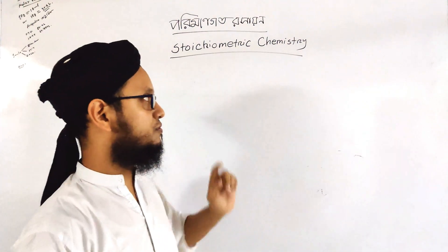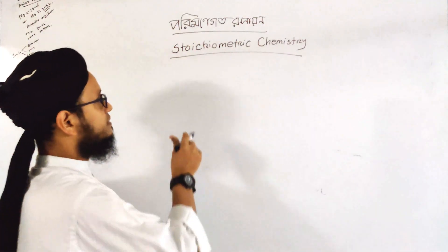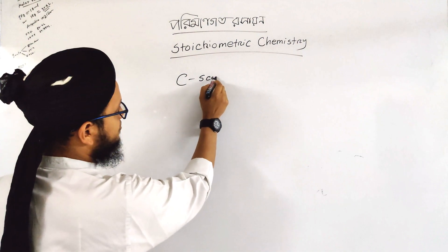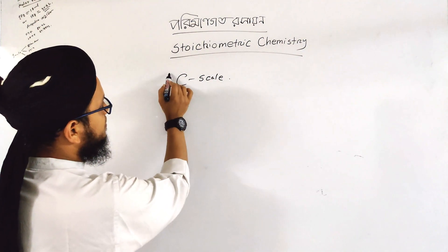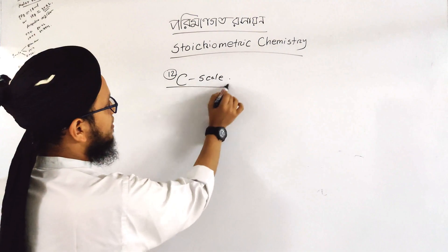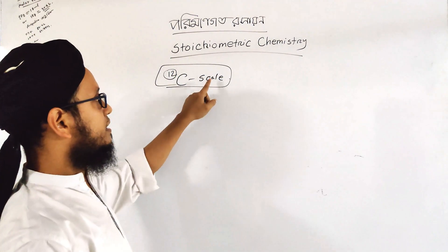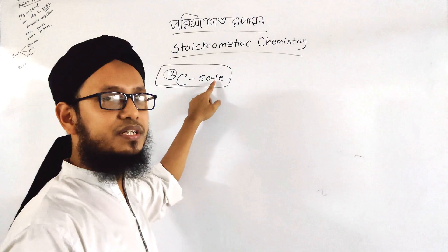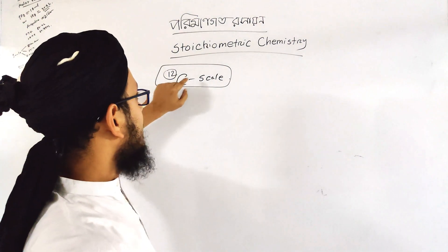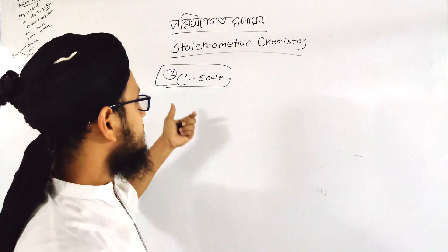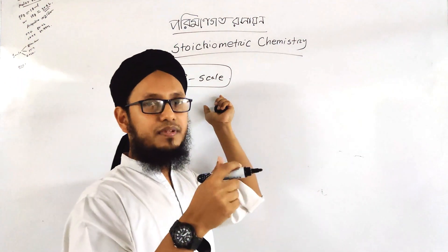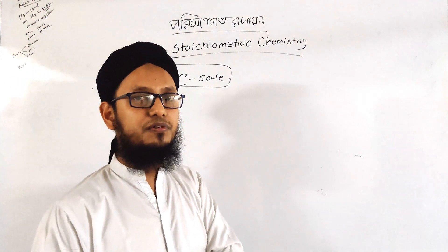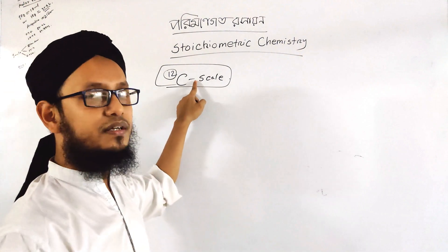This is the carbon scale. Carbon scale is very low. So, we have a standard. We have a very high level of carbon scale. Carbon scale is very low. We have a very low level of carbon scale.